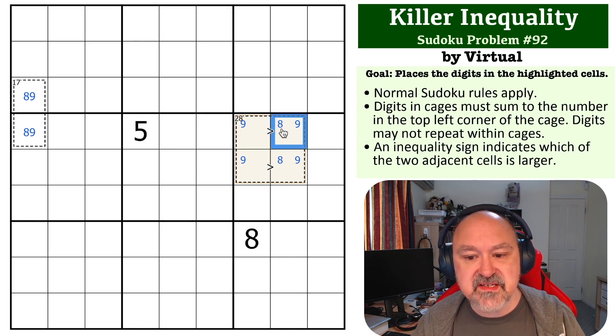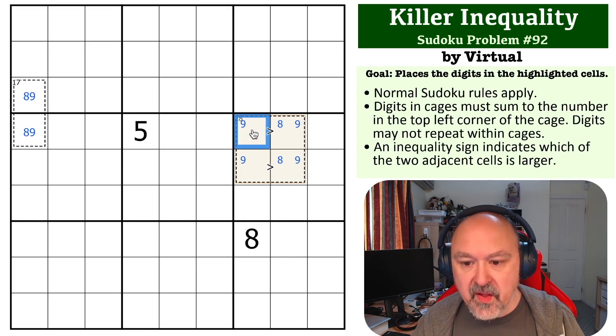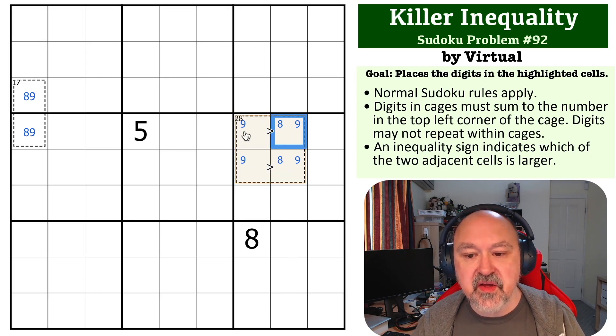Because if we put an 8 here, something has to be higher than the 8 to the left of it. So if we were to put an 8 here, the only thing that could be higher than the 8 would be the 9 here, and we can't do that because of the 8.